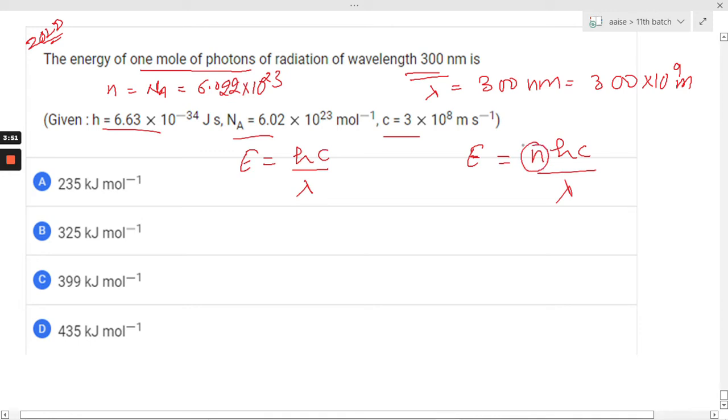So what we are supposed to do: just put the value of n here, and this is 6.022 into 10 raised to 23. After putting the value, E equals Na, Avogadro number, multiplied by hc by lambda.